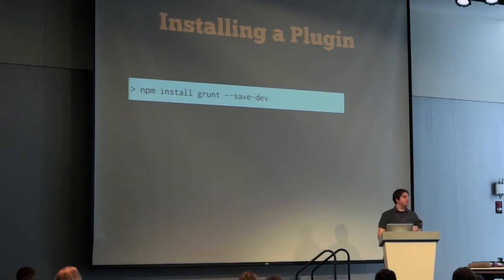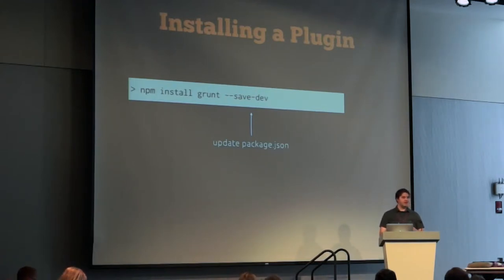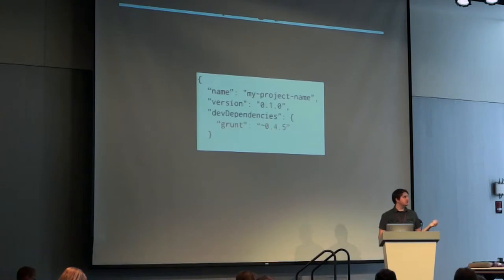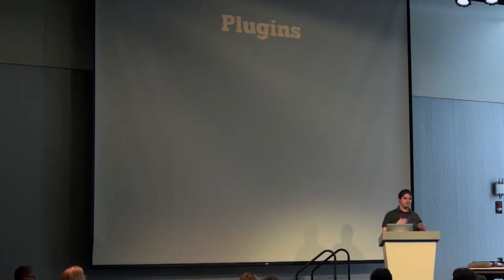What we installed earlier was the Grunt client which allows us to type the word grunt and execute it from the command line. What we're installing here are the actual Grunt source files which will do the compiling of the Grunt file for us. You're going to install this on every project. The command is: npm install grunt --save-dev. The --save-dev flag updates the package.json file for us — it adds this plugin into that list automatically. At this point the node_modules folder has been created and it's stored the Grunt plugin in there. But we haven't configured Grunt in any way, so if we run it, we don't really accomplish much.